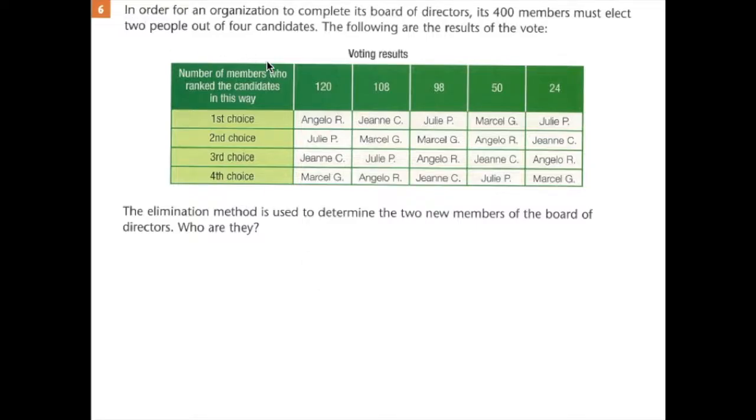Question number six. In order for an organization to complete its board of directors, its 400 members must elect two people out of four candidates. The following are the results of the vote.